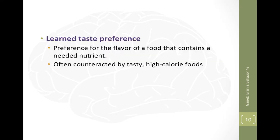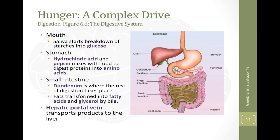We also have learned taste preferences — a preference for the flavor of a food that contains a needed nutrient. When humans and other animals are lacking a particular mineral or nutrient, something that contains that nutrient seems extra appealing and we're more motivated to eat it. This suggests there is some truth to listening to what your body wants. However, we are surrounded by such an abundance of tasty high-calorie foods that our ability to figure out what's best for us gets lost, and we lose that ability when overwhelmed by too much tasty high-calorie food.